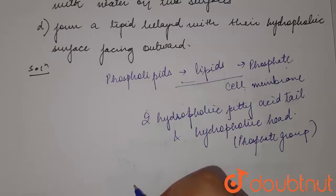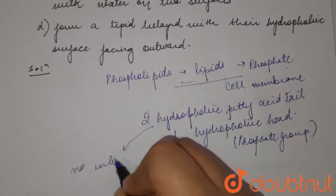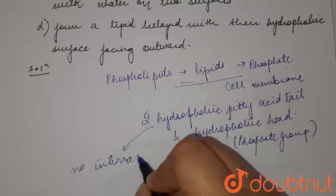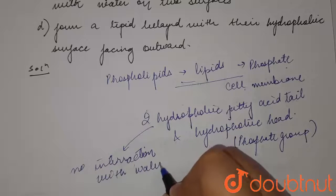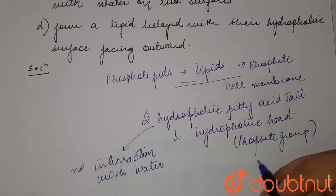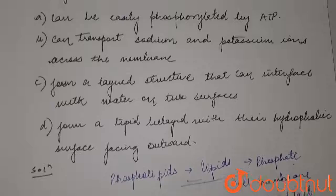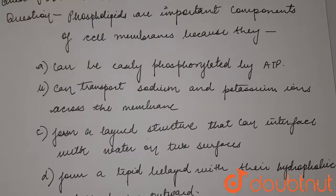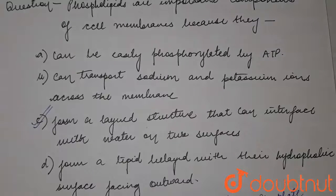The hydrophobic tail does not interact with water, while the hydrophilic head can interact with water. That's why they form a very important structural component — they form the layer structure that can interfere with water on the two surfaces. So our answer to the question would be option C. The answer is option C.